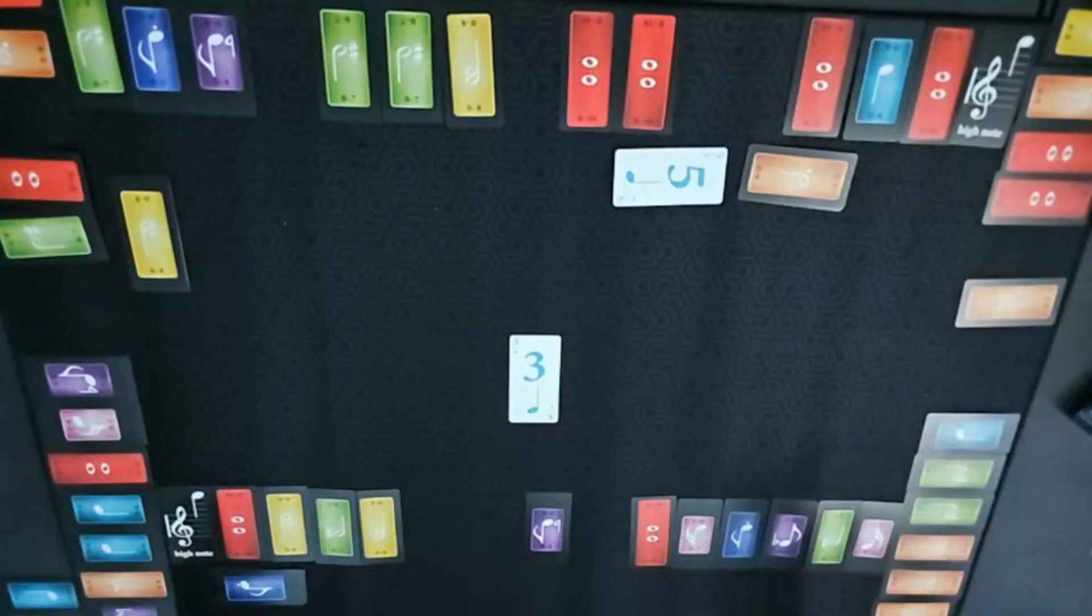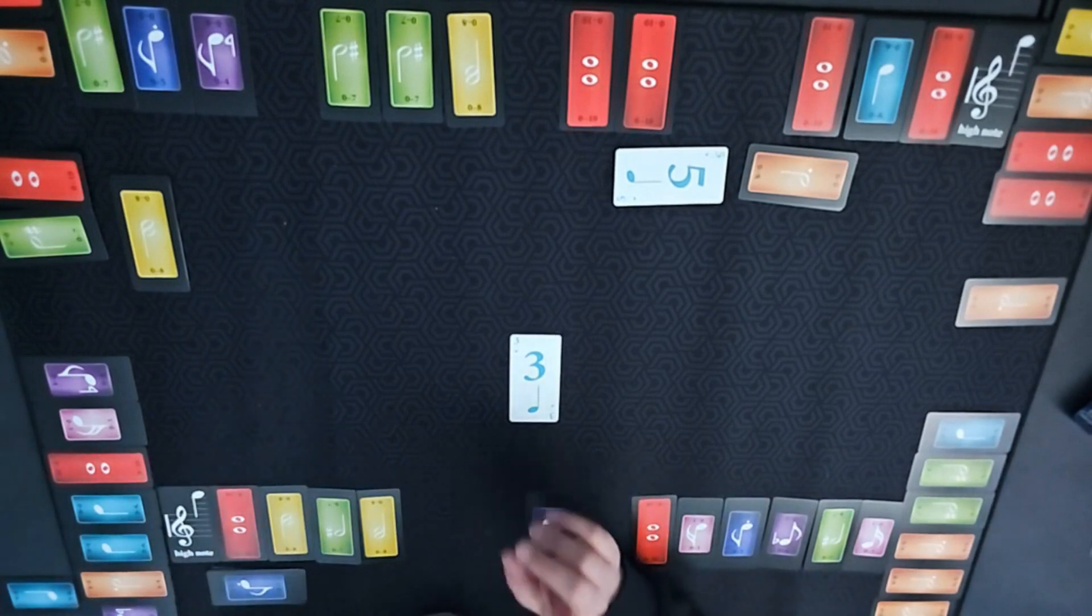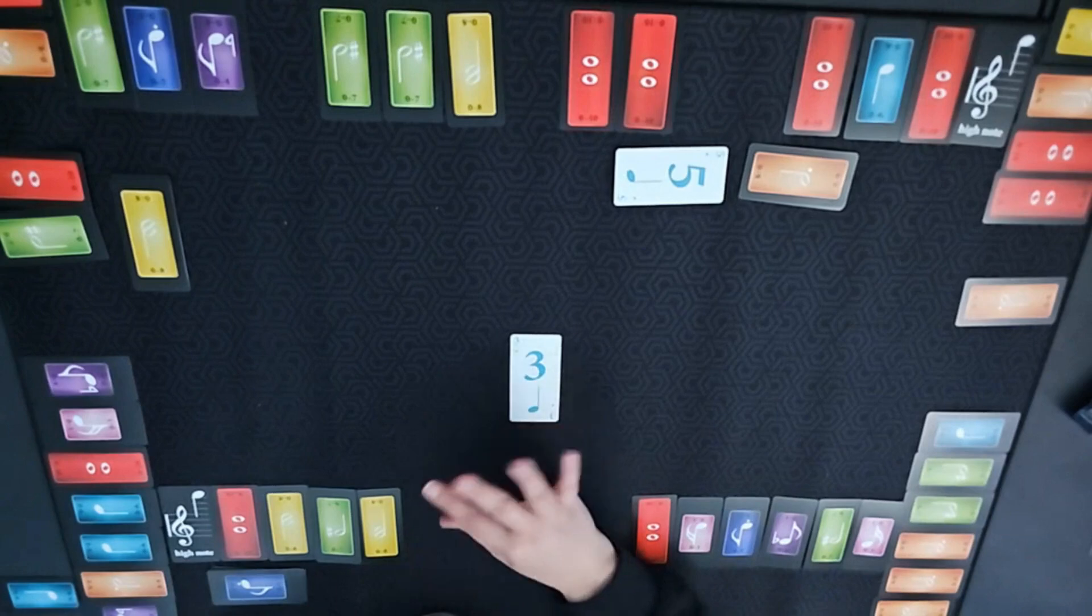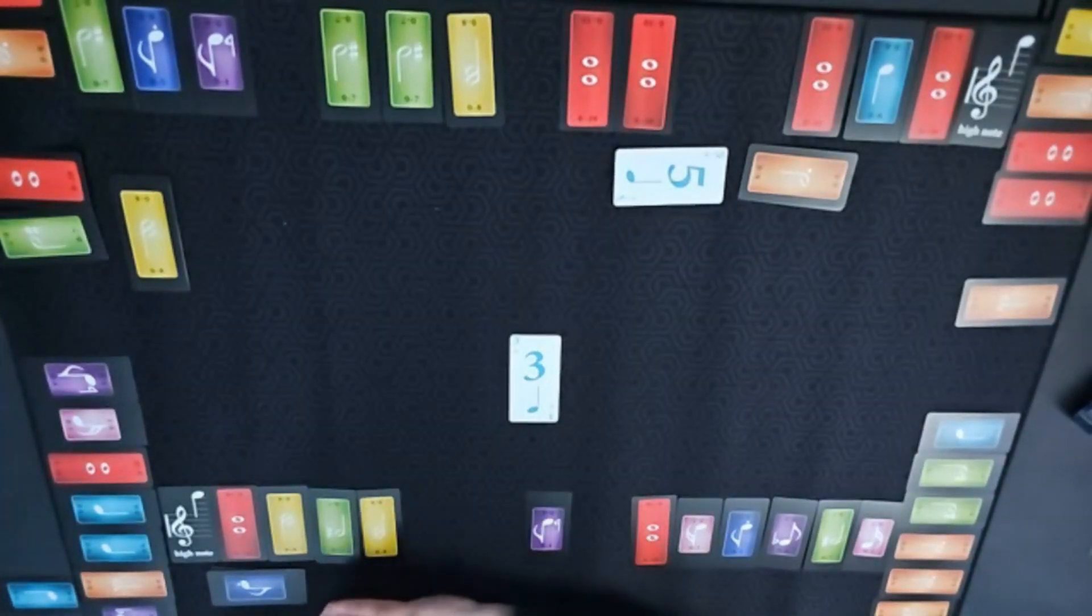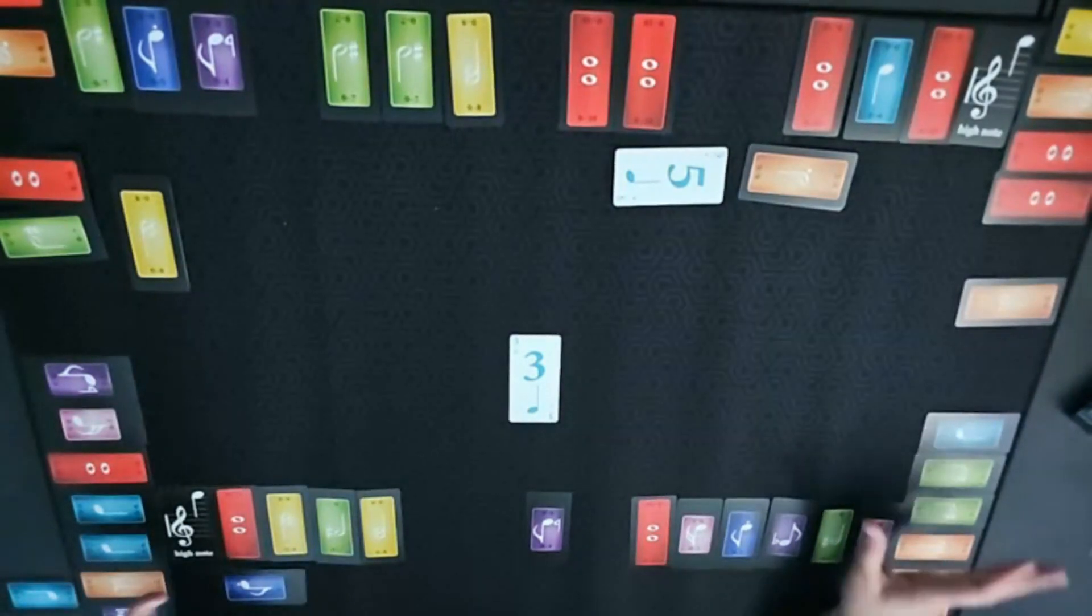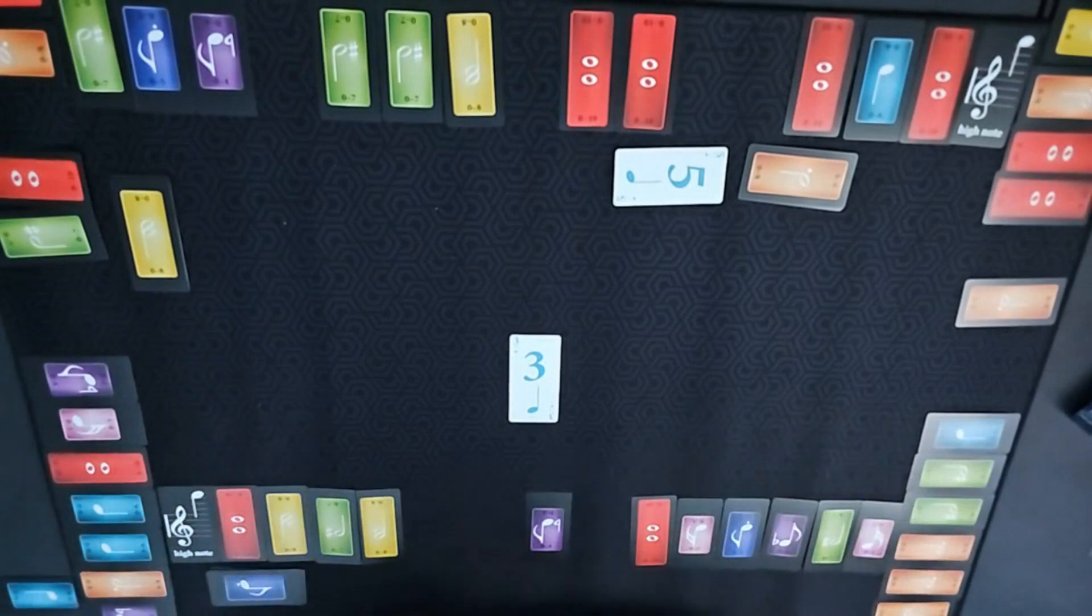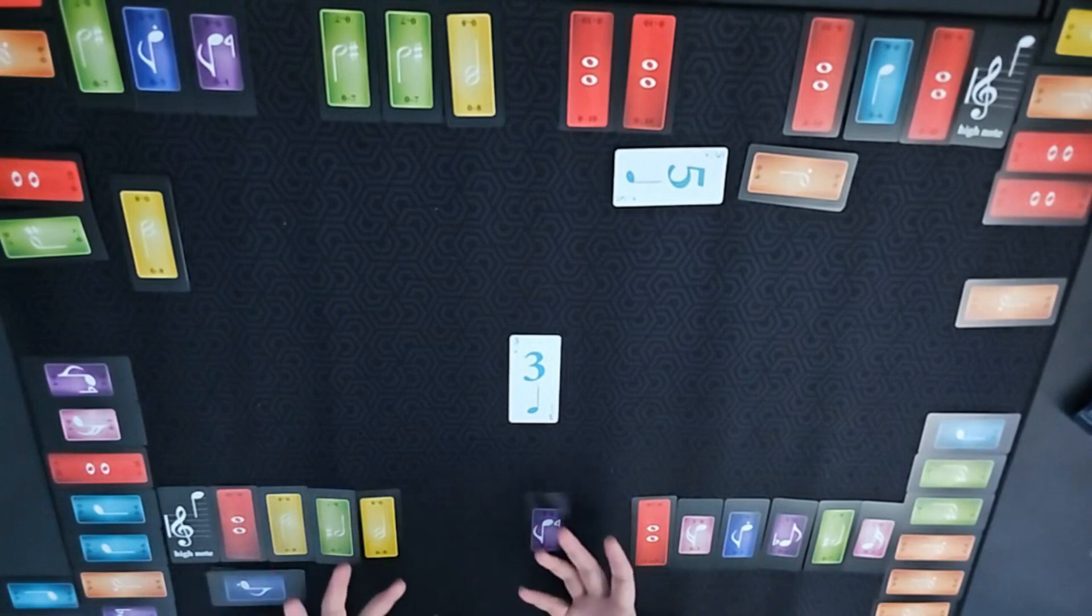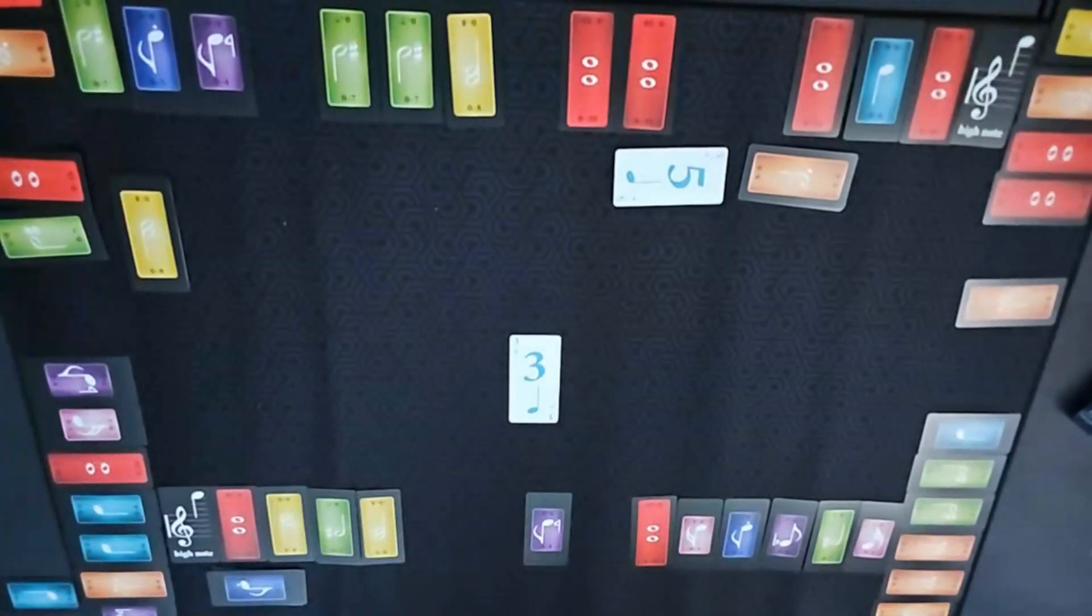Now if one of those dummy players match their bid, you don't get to score your tricks that round but if you match your own bid you get five points still. Now if both dummy players match their bid then you don't get to score any points this round. So I thought that was kind of an interesting way to create a two-player version of a trick-taking game and that's how Xylotar plays.